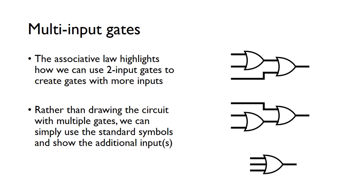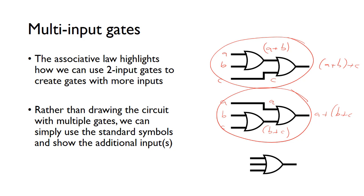So for multi-input gates, the associative law shows that we can use two input gates to create gates with more inputs. These two top circuits are exactly the same. Say this is A, B and C, that'll give us A OR B on the output here. We've got A OR B OR C. And then we know from the associative law these two are equivalent, so by connecting two two-input gates together like this, you can create essentially a three input OR gate. But rather than drawing it using the two input symbols, we just tend to use a symbol like this. For multi-input gates, you can just add on more lines on the input as you need.